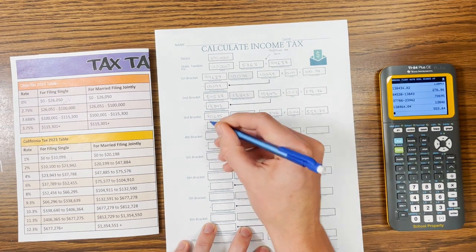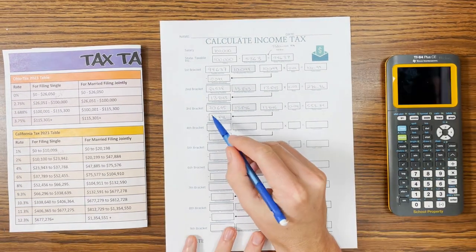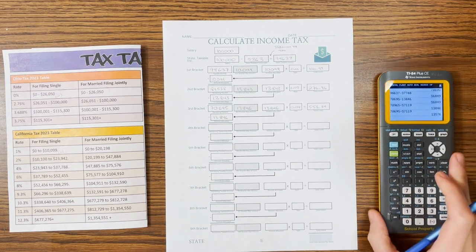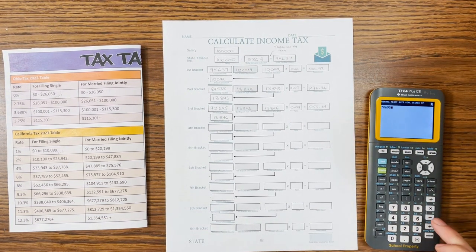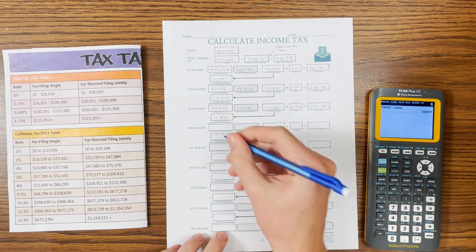And we've taxed that, so let's bring it down. Okay, so we have $70,695 minus the $13,846 that we've taxed already. So I have $70,695 minus $13,846, $56,849.